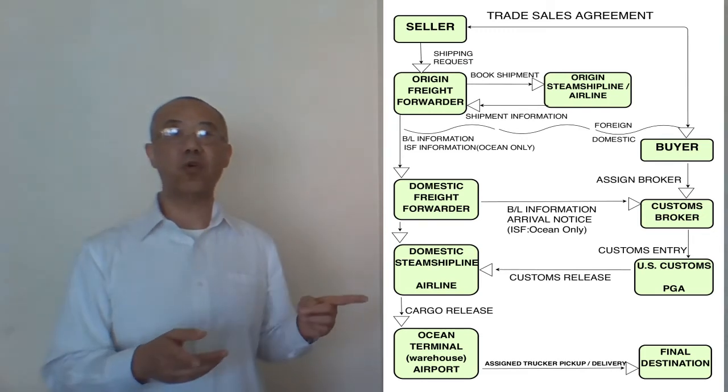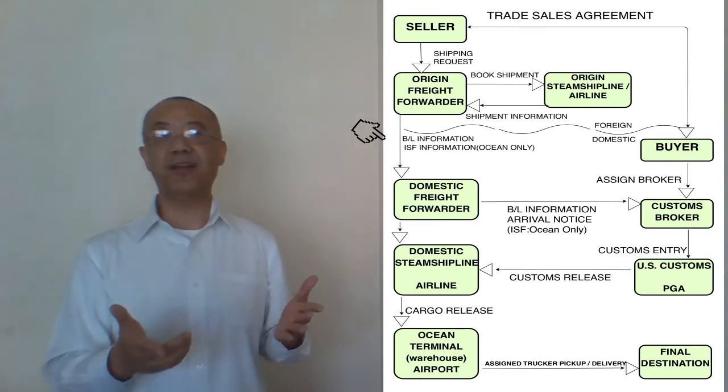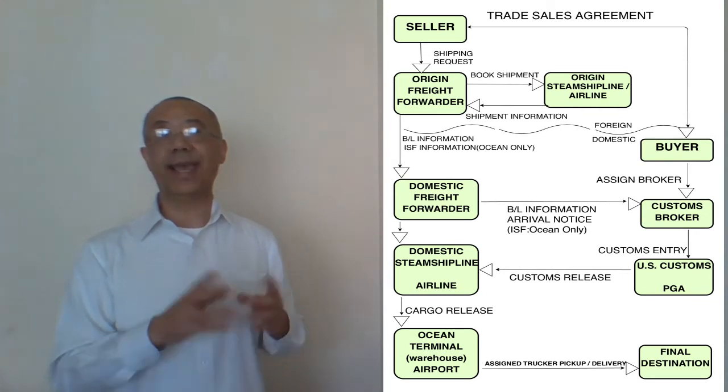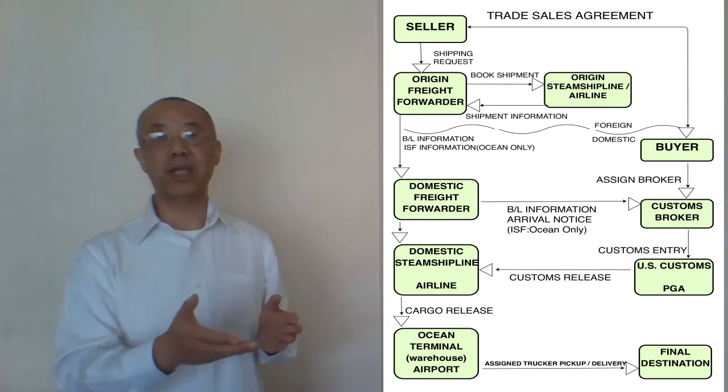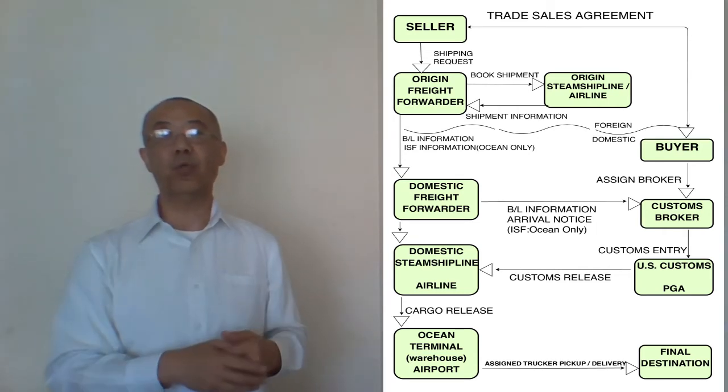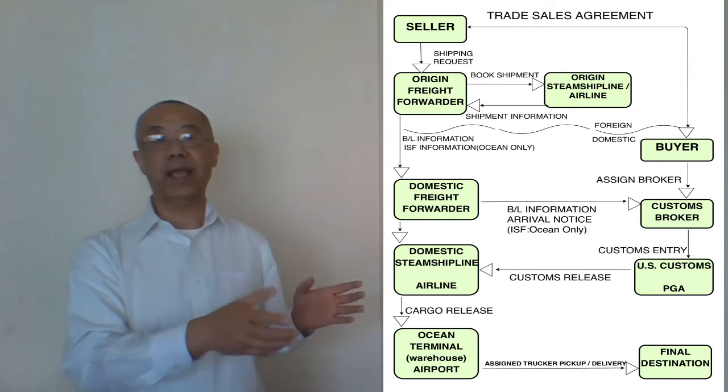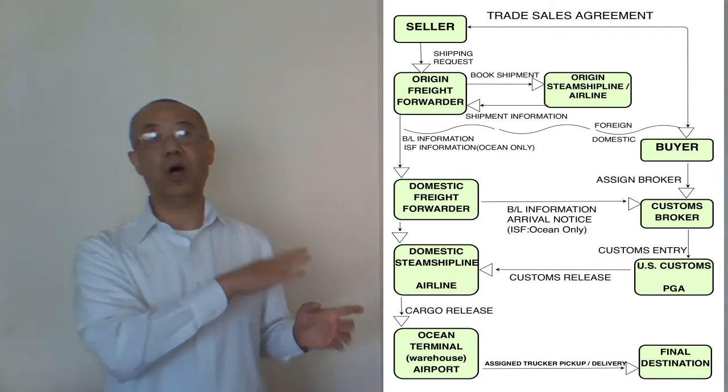the seller or freight forwarder will send ISF, which is for ocean cargo only, and AMS, which is an Automated Manifest System, to the foreign buyer or freight forwarder at the destination, to the US buyer with the designated custom broker or US freight forwarder in the third or fourth row of the flow chart.